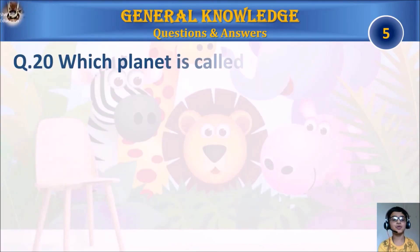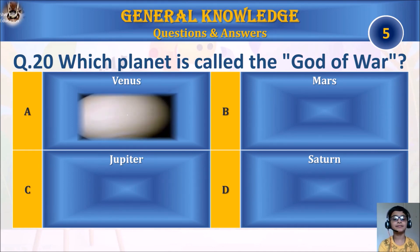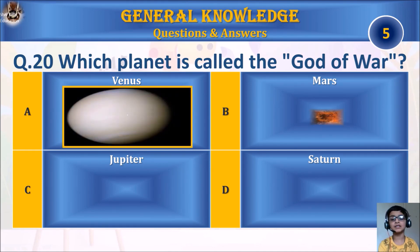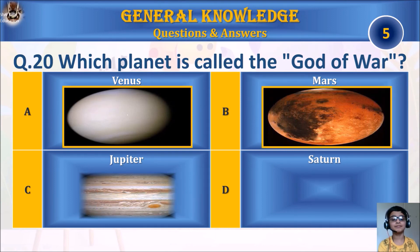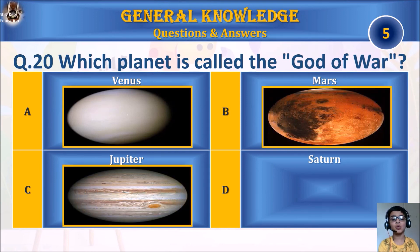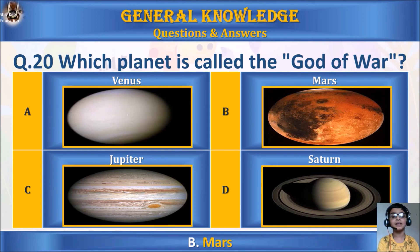Question 20: Which planet is called the god of war? A. Venus, B. Mars, C. Jupiter, or D. Saturn. Your time starts. The answer is B. Mars.